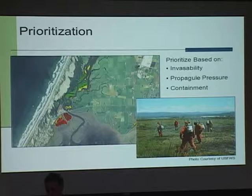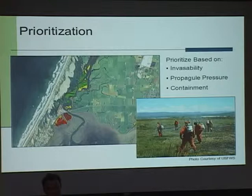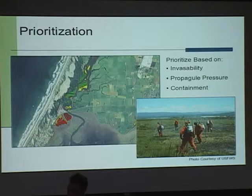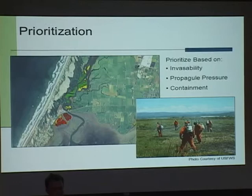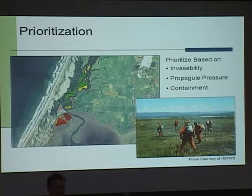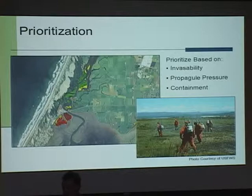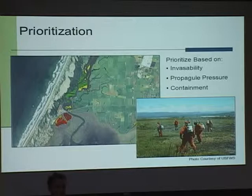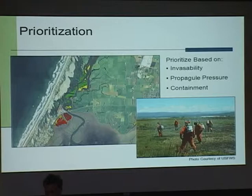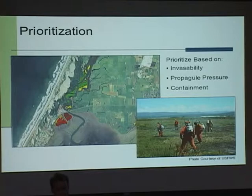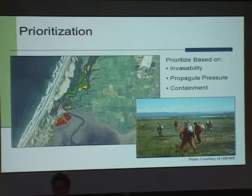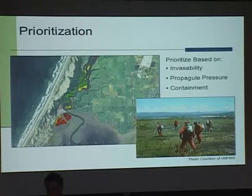There are three key parameters we've used to develop a prioritization decision-making framework. First is the invasibility of any site — how sensitive a given site is to being invaded by Spartina. Sites that have recently been treated have higher invasibility due to more bare ground, making them a higher priority. Second is propagule pressure — how much seed is likely to leave a site and reach another highly invasible site; higher seed contribution means higher priority. Third is containment: if significant containment has already been conducted at a site, we want to protect that investment, so higher existing containment also raises the priority.